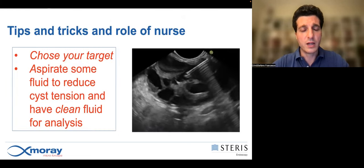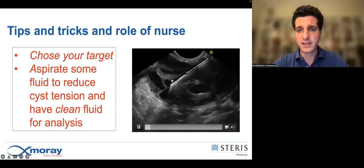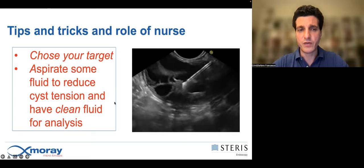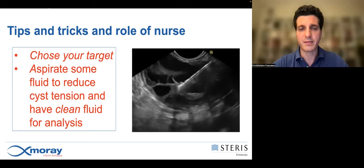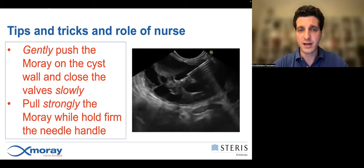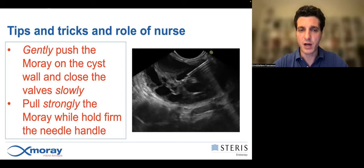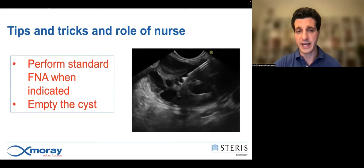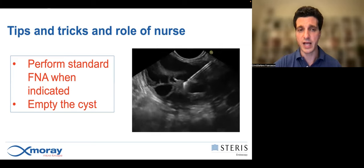Moving to the second point: tips and tricks of through-the-needle biopsy. First, you have to choose your target — in this case, a thickened septum. You have to aspirate some fluid to reduce cyst tension and obtain clean fluid for analysis. Then gently push the Moray micro forceps on the target and slowly close the valves. Sometimes you must pull the micro forceps off strongly, but hold firmly the needle handle to avoid the risk of getting out of the lesion. You can also perform standard FNA if indicated, and most importantly, don't forget to empty the cyst.